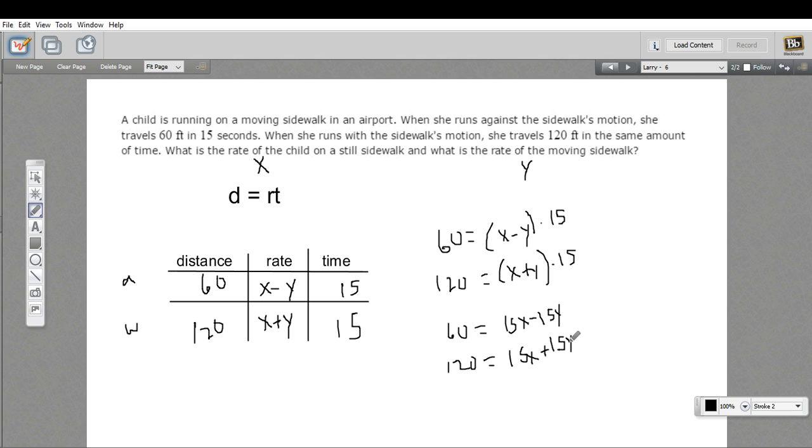And these two equations, this system is set up just perfectly to do the elimination method. So what I'm going to do is just add these two equations together. 60 plus 120 is 180. 15x plus 15x is 30x. And negative 15y plus 15y is nothing. So the y disappears. We get one equation with one variable. That's exactly what we wanted.